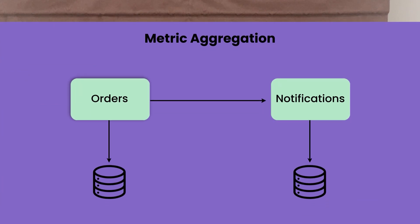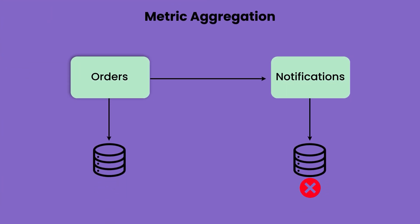Very similar to logs, you also need to aggregate metrics so that you can correlate events. Let's say the notification DB goes down — you might want to know why. If you have aggregated metrics across all services and systems, you might notice there was a huge throughput in orders placed in a small window of time. The order service handled that because it was scaled properly; however, the notification DB couldn't take that load and went down or started throwing errors. If you know that at a certain time order throughput increased and at a certain time the DB went down, that means there is a correlation. Aggregated metrics with dashboards makes it much easier to find issues.